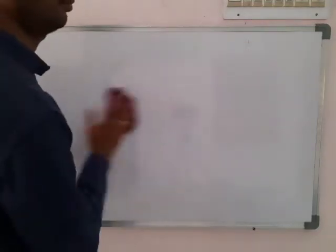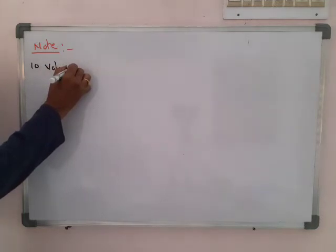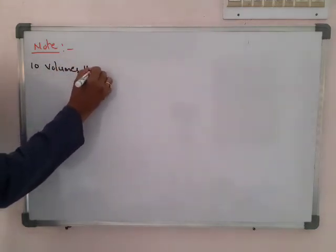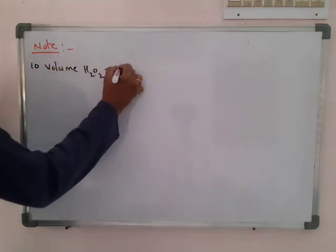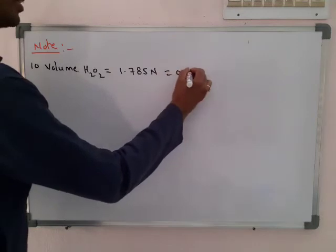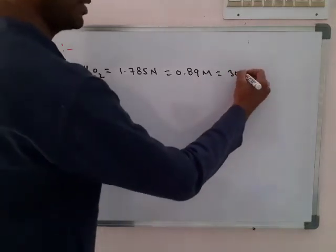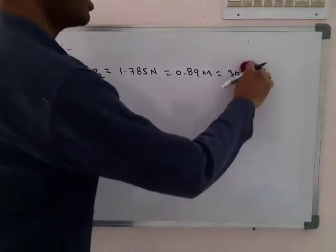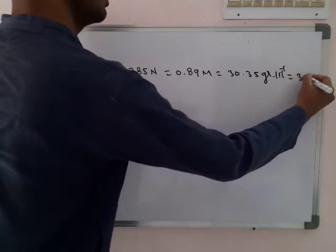This is a very important point. Let's fix this. 10 volume hydrogen peroxide equals: 1.785 normality, 0.89 molarity, 30.35 grams per liter (taken as 30 in calculations), and 3% percentage strength. These are all fixed values to remember.